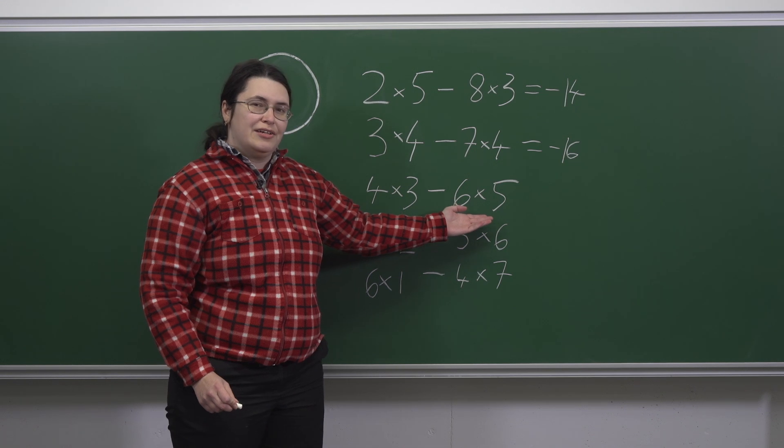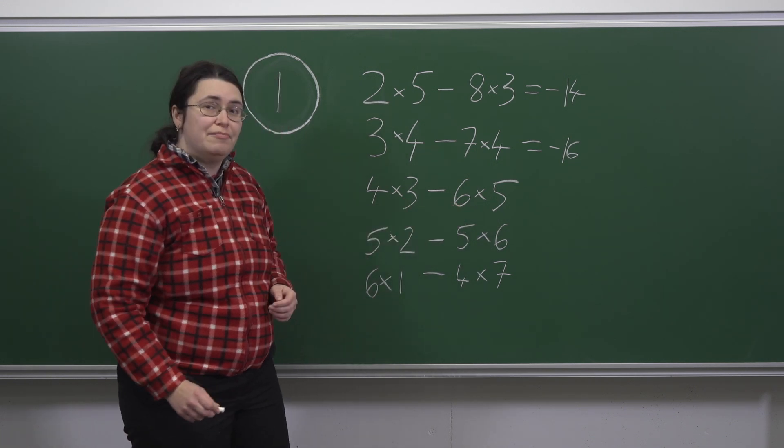4 times 3 is 12, 6 times 5 is 30, 12 minus 30, we get minus 18.